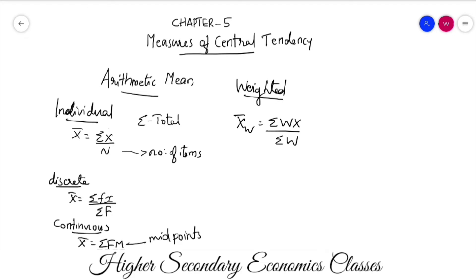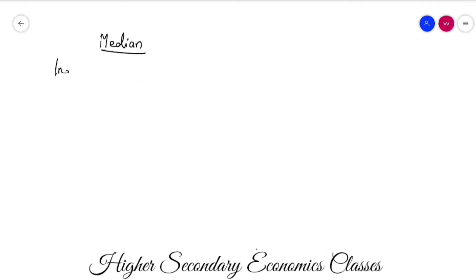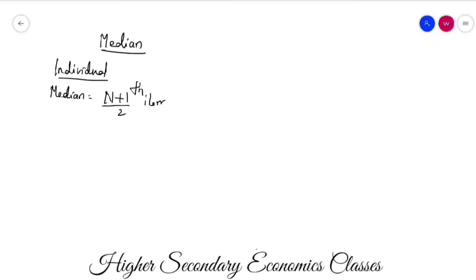Now we move to the median. For individual series, the median is the (N+1)/2 th item. First step: find the value of (N+1)/2 to identify the position. Then arrange values in ascending order and select that item.